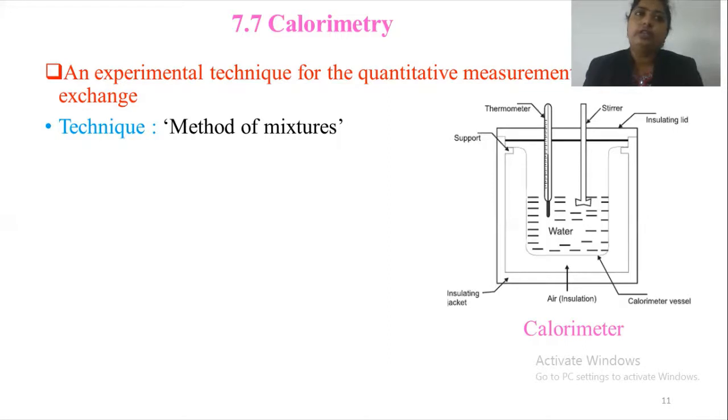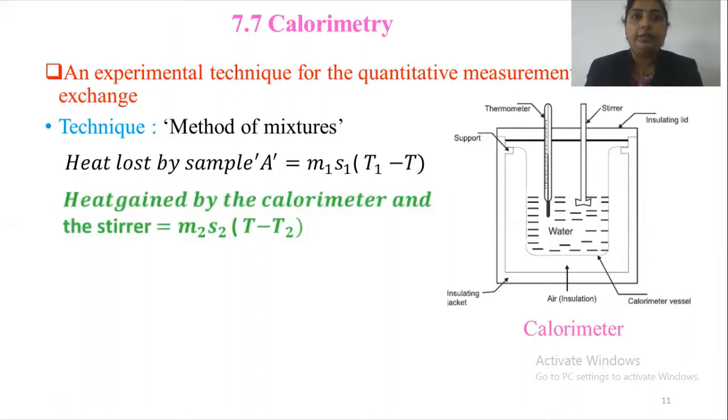We have the heat lost by sample A which is M1 S1 into T1 minus T. Heat gained by the calorimeter and stirrer is M2 S2 into T minus T2. Heat gained by the water is M3 S3 into T minus T2.